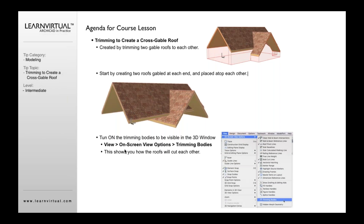The first thing we want to do is to show our trimming bodies — that's what you see right here. This helps us see what's going on. If you've not used this before, you can go to your View menu, On Screen View Options, and go to Trimming Bodies. That will then show our trimming bodies in terms of how it's being trimmed.